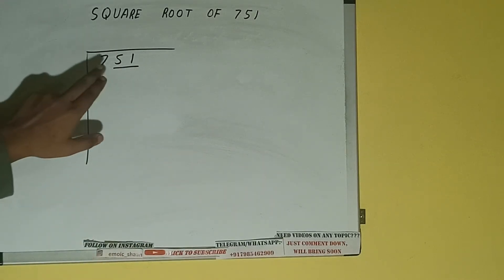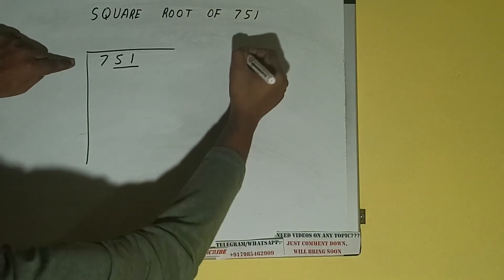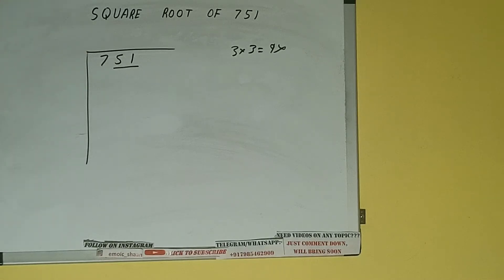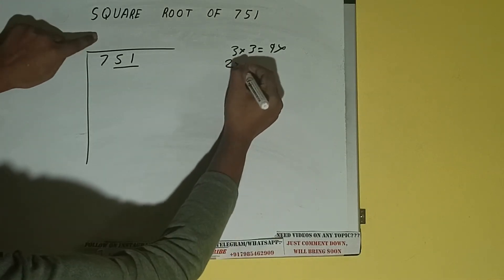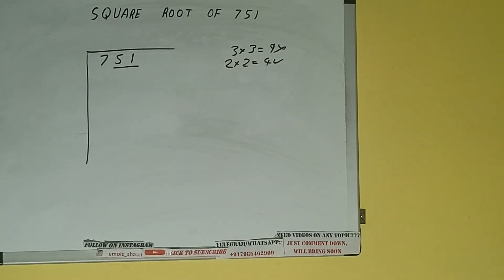First we'll write this 7, then bring down the pair. The rule is whatever number we write here, we have to write here also. If we write 3 here and 3 here, it will be 9, which is greater than 7, so we cannot take it. If we write 2 here and 2 here, it will be 4, which is good to take.